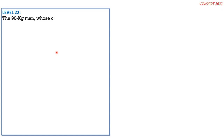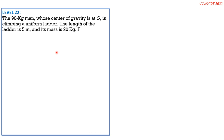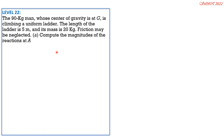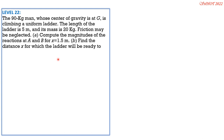Level 22 problem. A 90 kg man whose center of gravity is at G is climbing a uniform ladder. The ladder is 5 meters long and its mass is 20 kg. Friction may be neglected. Part A: compute the magnitudes of reactions at A and B for X = 1.5 m. Part B: find the distance X for which the ladder will be ready to fall.